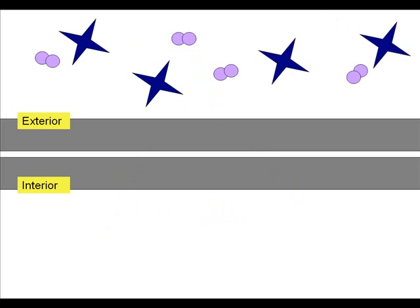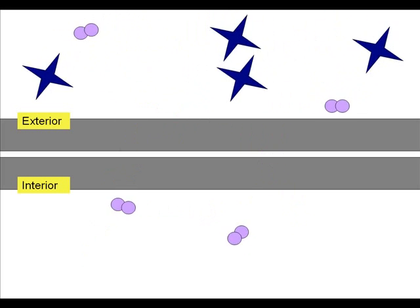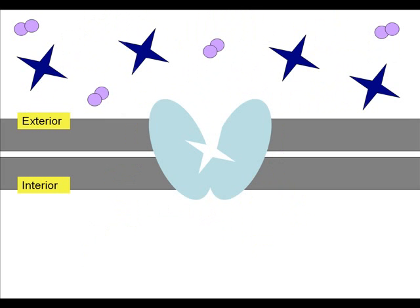Glucose, which is also an uncharged molecule, is too large to simply diffuse through the membrane. It needs a carrier protein to transport it to the inside of the cell. The light blue carrier protein contains a binding site for glucose.